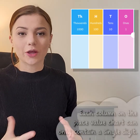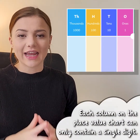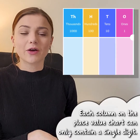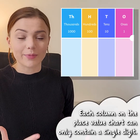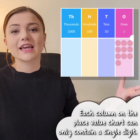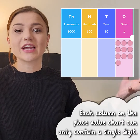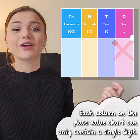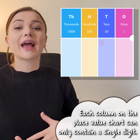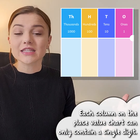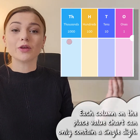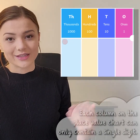Each column on the place value chart can only contain a single digit. This is because, for example, if we had 10 ones on our place value chart, they would be exchanged for one ten, which would move into the tens column. Or if we had 10 hundreds, they would be exchanged for 1,000, which would move into the thousands column.